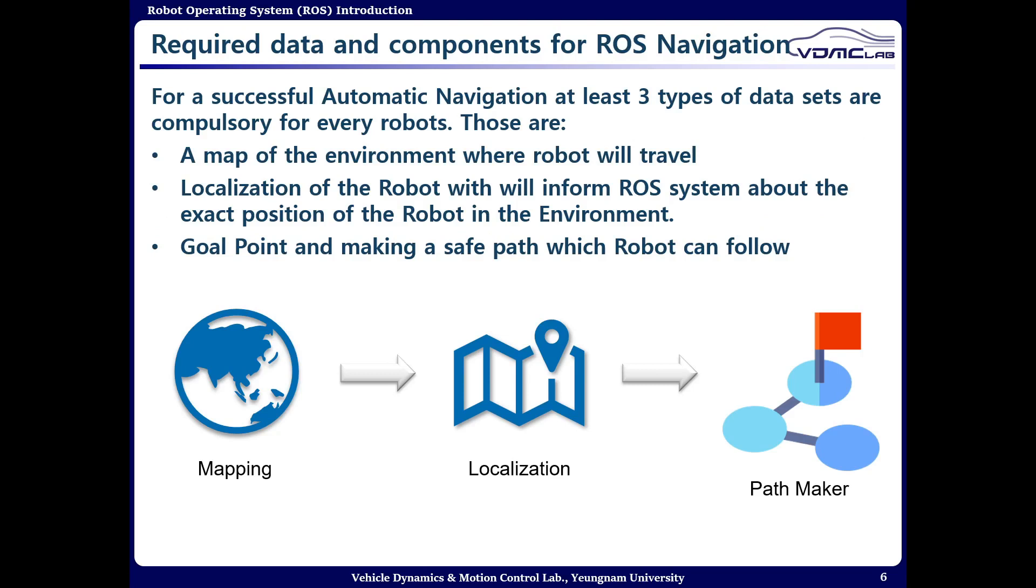For successful automatic navigation, three types of data sets are very compulsory. First of all, you need a mapping, then you have to make the localization, and third you have to make a trajectory so that it can travel through that path. You can also call it a path maker.